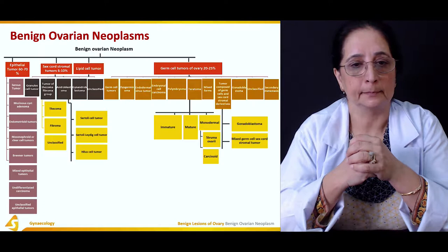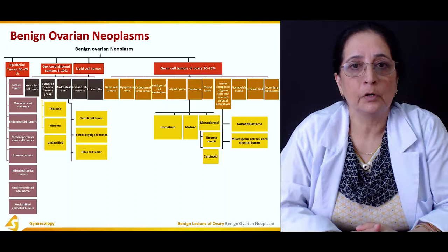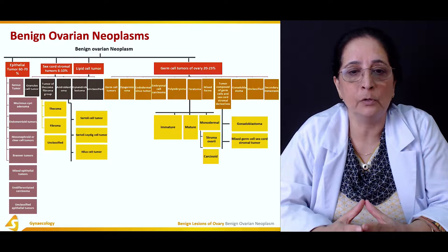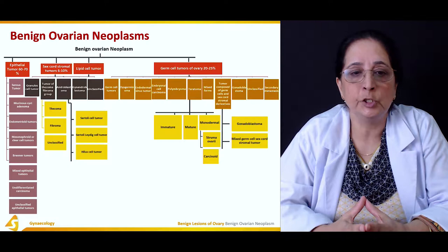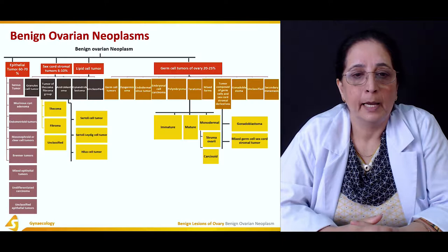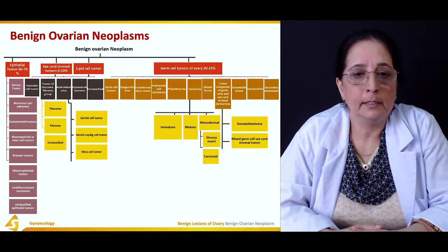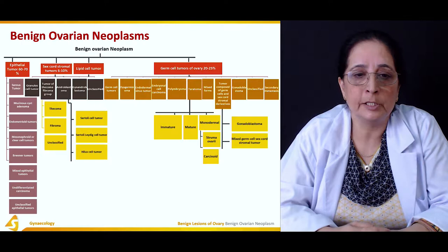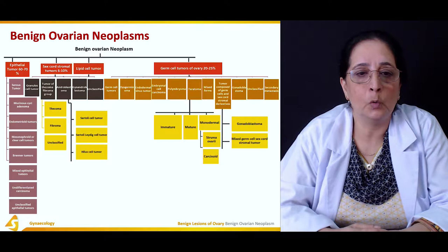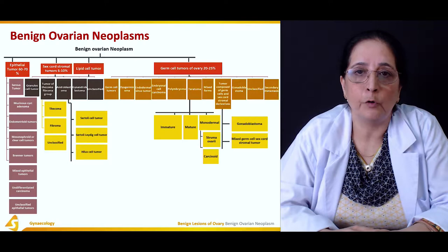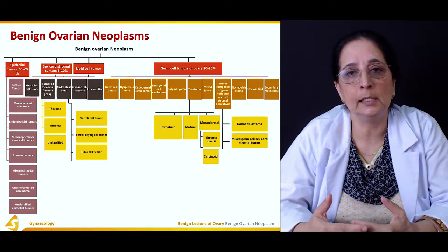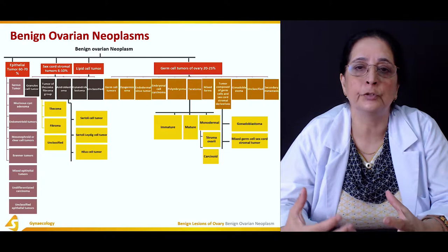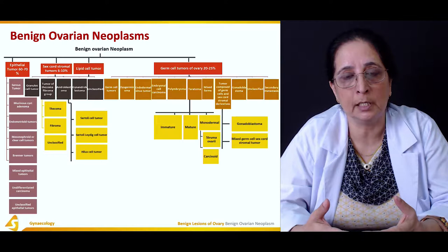Sex cord stromal tumors of the ovary constitute about 6 to 10% of all benign ovarian tumors. This group includes granulosa cell tumor, tumors of the thecoma-fibroma group, and androblastoma tumors. As with other categories, there is an unclassified type for tumors whose cells are not clearly differentiated enough to fit any specific group.